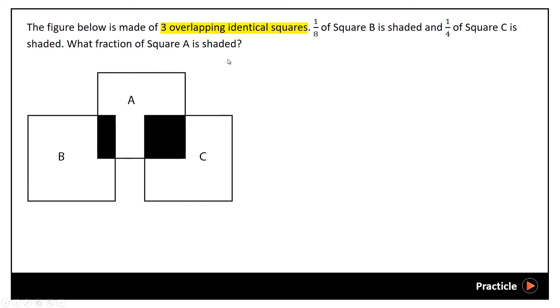1/8 of square B is shaded. So we know that 1 part out of a total of 8 parts of square B is shaded, which means that the unshaded part of square B would be 8 minus 1, 7 parts.